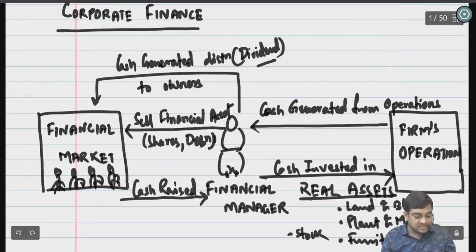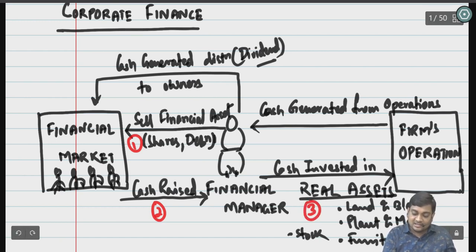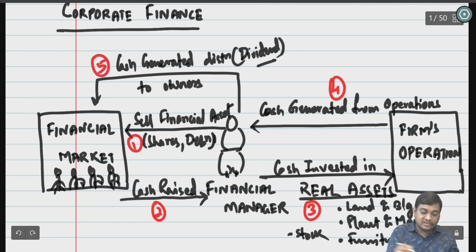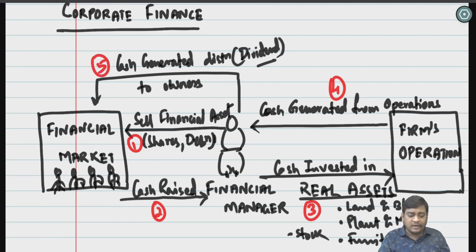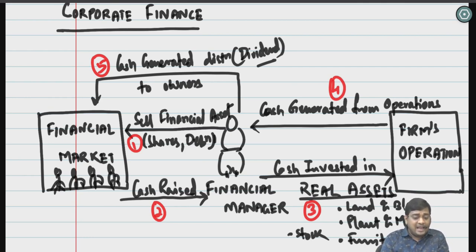The steps are as follows: first, sell financial assets; second, raise funds; third, invest in real assets; fourth, cash is generated; and fifth, pay dividend. There are many sources of raising finance from the financial market through investors. Financial institutions, banking companies, and underwriters will help us reach investors who will put in money.